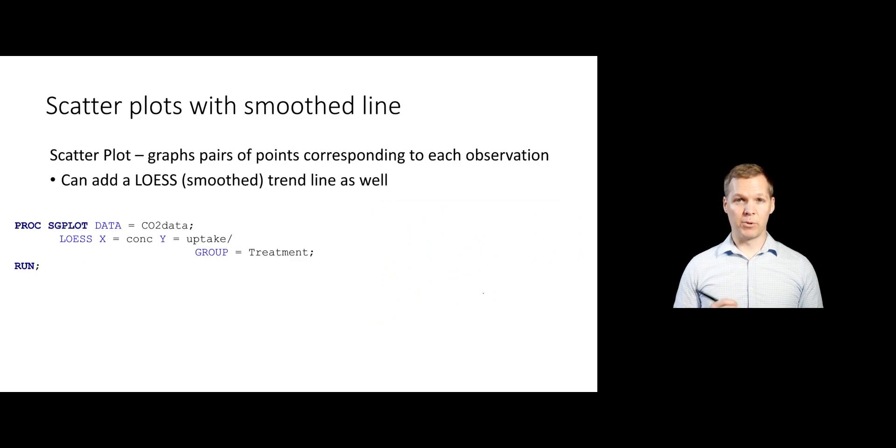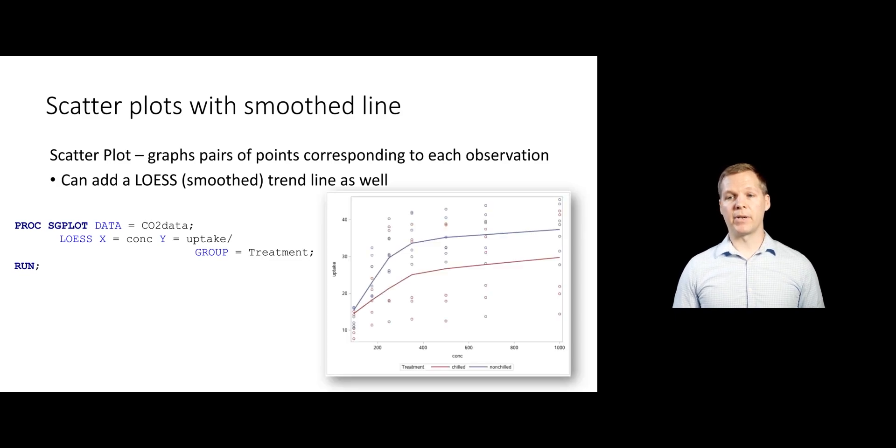You can also add in a smooth curve rather than a straight line. And so here we're going to use LOESS for locally weighted sums of squares. And we're just going to replace again that statement with LOESS. And now we don't have the straight lines, but we have sort of piecewise straight lines in this case.